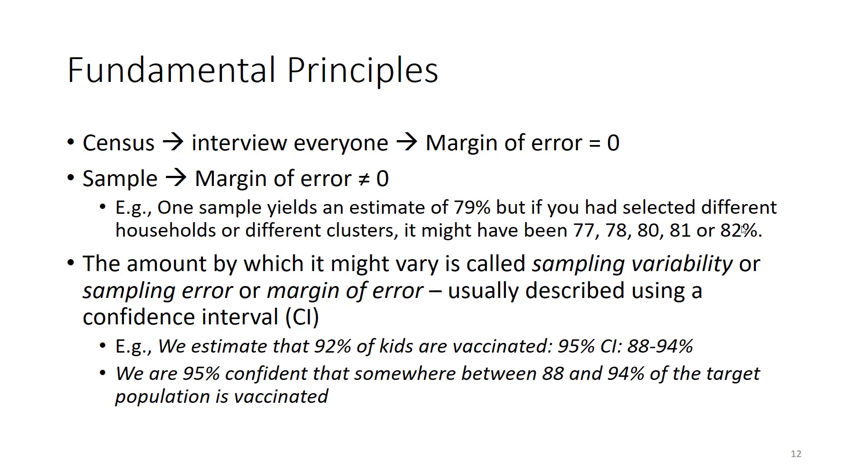So we might say that the estimated proportion of vaccinated kids was 92%, and the 95% confidence interval extends from 88% to 94%. By that, we mean that we are 95% confident that the true proportion in the target population is somewhere between 88% and 94%.